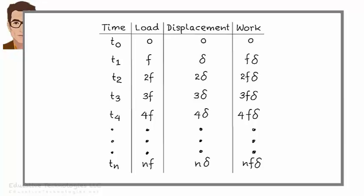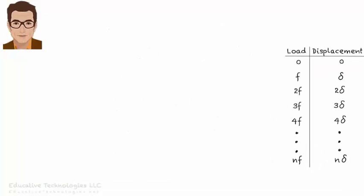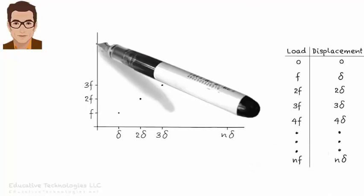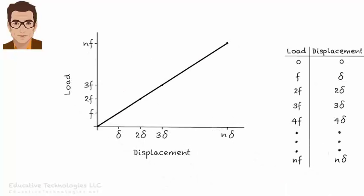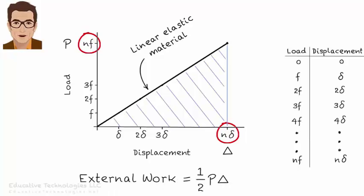What is the total work done by the applied load? The sum of the work increments. Although we can determine the external work by calculating the sum, there's an easier way. Let's graph our tabulated data. We get a straight line. The relationship between load and displacement is linear because we're dealing with linear elastic material. Work done by the total load is simply the area under the line graph, the area of the triangle with height nF and base n delta. Since nF is the total applied load P, and n delta is the total displacement big delta, then external work equals one half P delta.